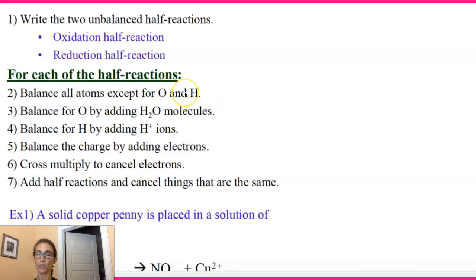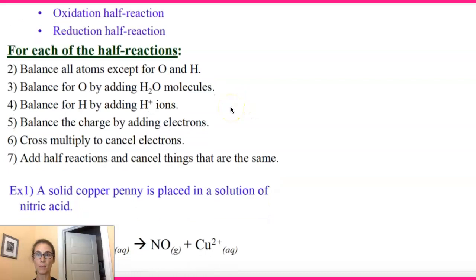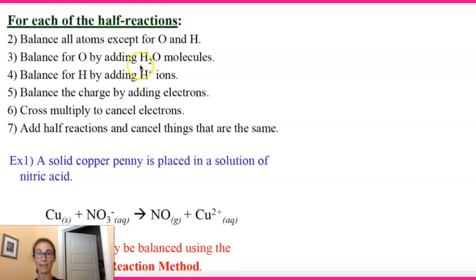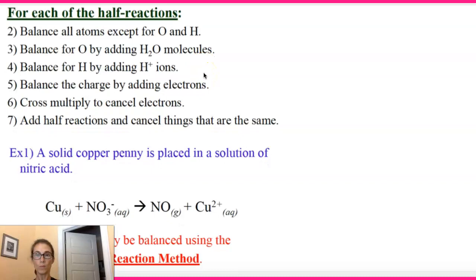So first, you balance all of the atoms that are not oxygen and hydrogen. So say manganese was in the reaction, you want to do manganese first — anything other than oxygen and hydrogen first. Step two: any oxygens that you have, you're going to balance those by adding H₂O to the other side of the reaction. The next step is you're going to balance all hydrogens by adding H⁺ ions to the opposite side of the reaction.